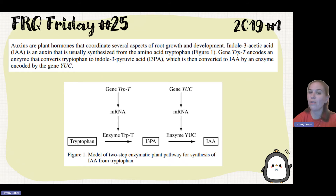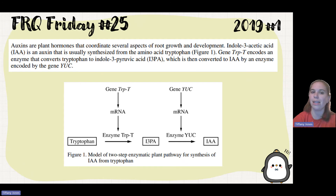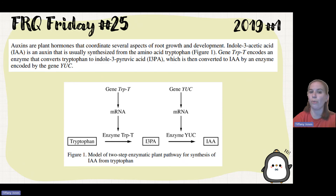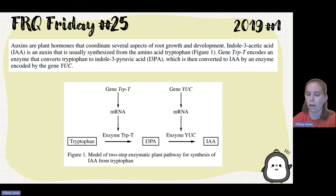Auxins are plant hormones that coordinate several aspects of fruit growth and development. Indole-3-acetic acid, IAA, is an auxin. They usually consist of the amino acid tryptophan.